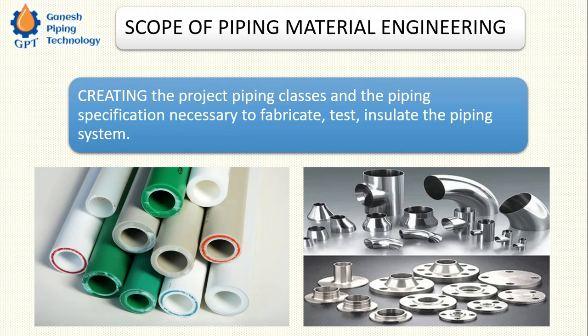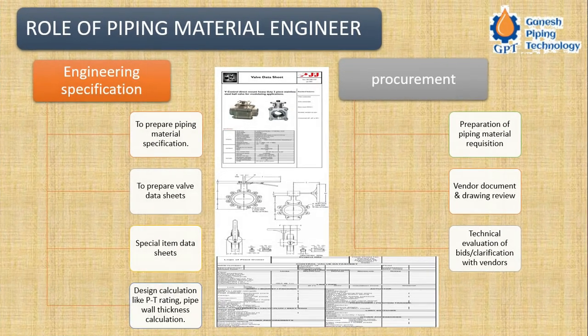I will describe this as creating the project piping class. This project piping class includes all materials applicable for a given project and the piping specification necessary to fabricate, test, and insulate the piping system. This is the broader definition of piping material specification classes.